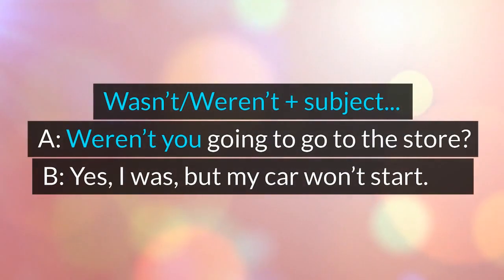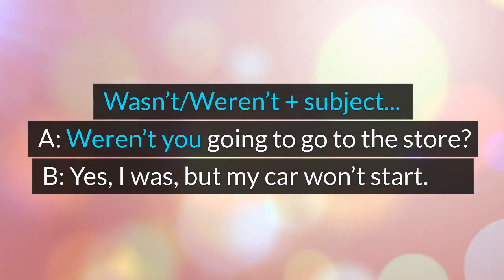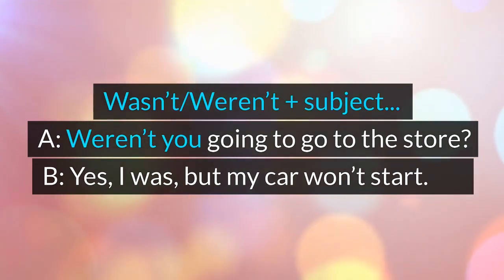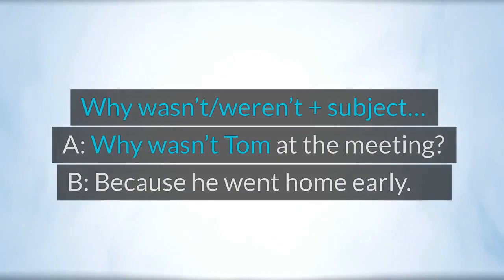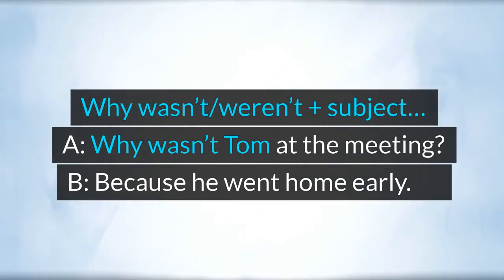Wasn't / weren't plus subject. A: Weren't you going to go to the store? B: Yes, I was, but my car won't start. Why wasn't / weren't plus subject. A: Why wasn't Tom at the meeting? B: Because he went home early.